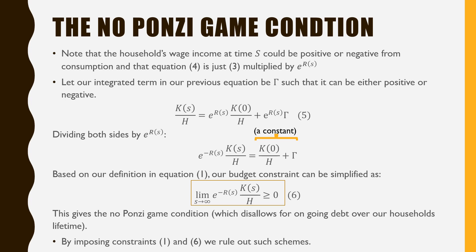Note that the household's wage income at time s could be either positive or negative from consumption, and equation 4 is just equation 3 multiplied by e^(R(s)). Let our integrated term in our previous equation be gamma, such that it can be either positive or negative.